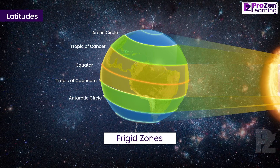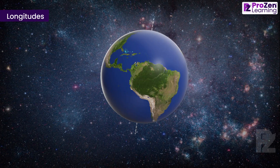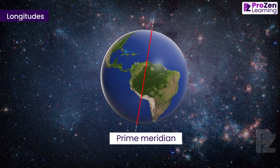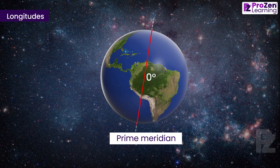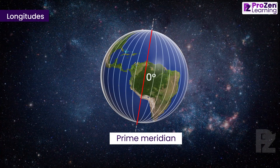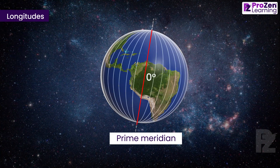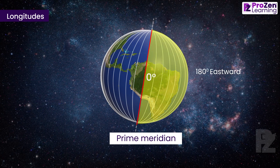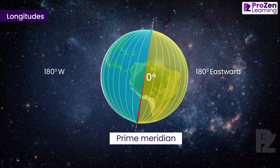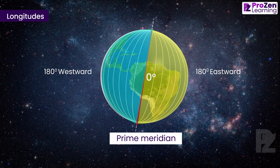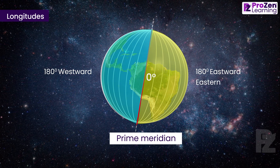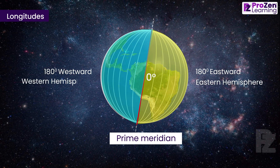Due to their proximity to the poles, the Frigid Zones are very cold, as the sun does not rise much above the horizon. Now let's explore longitudes. The Prime Meridian is assigned a value of zero degrees longitude. From here, we count 180 degrees eastward as well as 180 degrees westward, creating the Eastern Hemisphere and the Western Hemisphere.